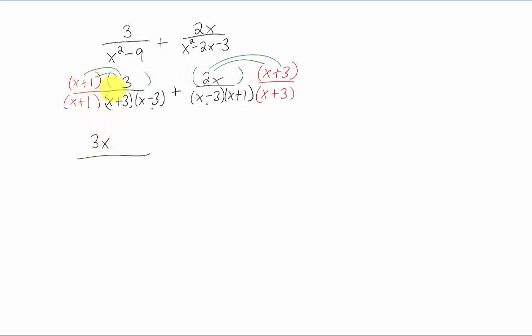3 times x is 3x. 3 times 1 is 3. I'm going to rewrite this denominator. In the second term, 2x times x is 2x squared. 2x times 3 is 6x. I'm going to rewrite this denominator as well, ordering it the same way as the first one.